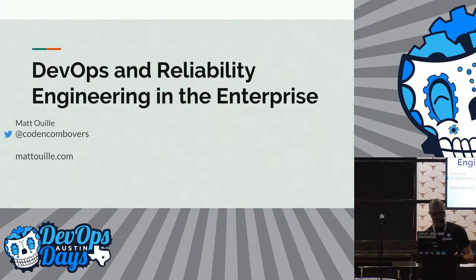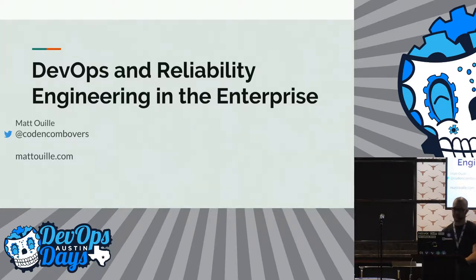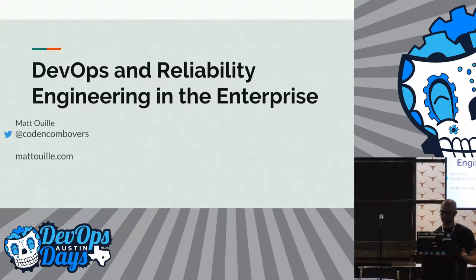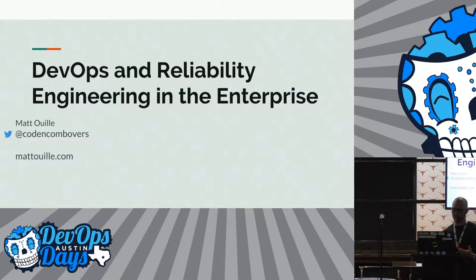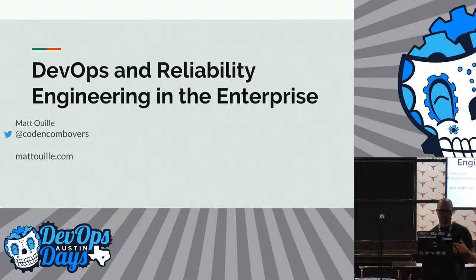My name is Matt Ouyyeh - nobody ever gets it right anyway, so it's not a big deal. I'm a reliability engineer, systems engineer. I've worked in DevOps for quite a while, been kind of a DevOps enthusiast. I've helped do a lot of organizational transformations, and over the years I've seen trends in organizations trying to revamp themselves to build a more fluid organization that DevOps or SRE will actually fit into. And that in itself is really kind of a challenge.